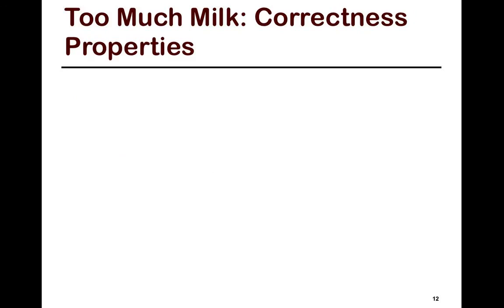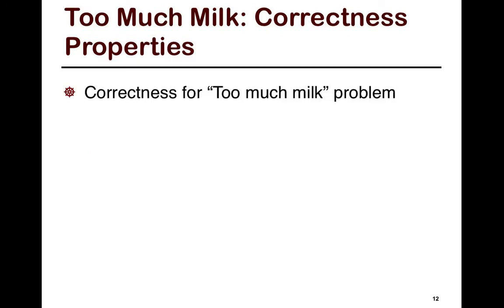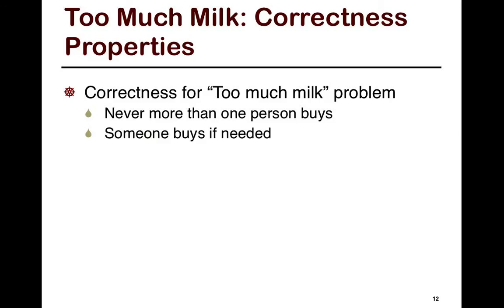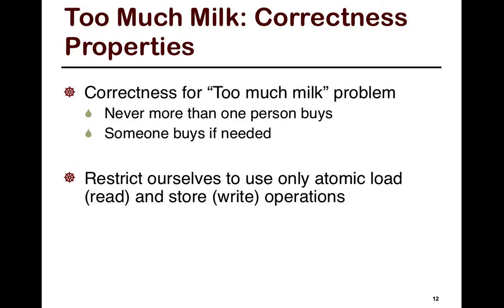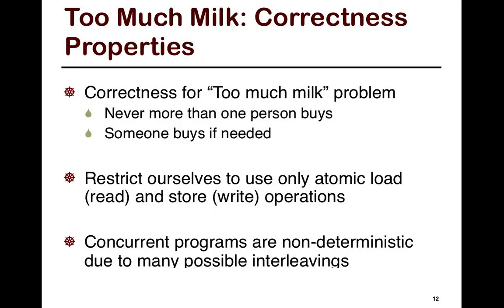To solve this problem, we first need to define the correctness properties. Correctness for too much milk: never more than one person buys, and someone buys if needed. The first solutions we look at will restrict ourselves to only atomic read and write operations — no lock. The challenge is that concurrent programs are non-deterministic due to many possible interleavings. It's okay if any roommate buys — we just care that someone buys, but not both.